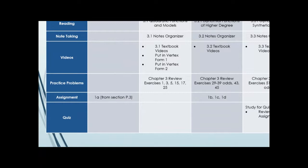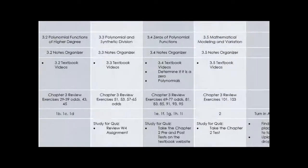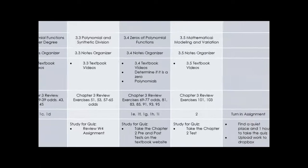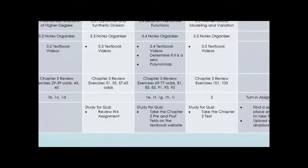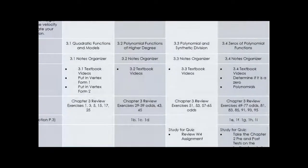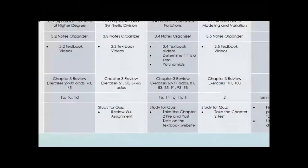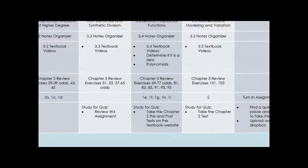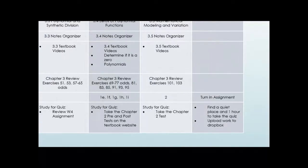Parts b, c, and d vocabulary is found in section 3.2. Then you learn synthetic division, and the rest of problem one you learn how to do in 3.4 — so when you get to 3.4, I recommend working on the assignment at the same time. Problem two goes with 3.5. You don't really need 3.3 to do 3.4, which is why there are gaps. For the quiz, review your week four assignment, take the chapter two pre and post tests, and take the chapter two test.